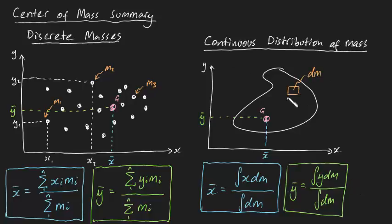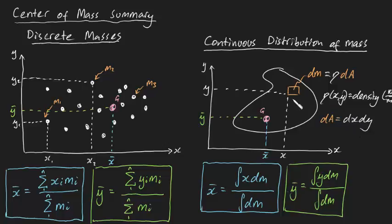And to evaluate this integral, you'll most likely have to rewrite dm as rho dA, where rho is the density in kilograms per meter squared, and dA is equal to dx dy, the infinitesimally small chunk of area.